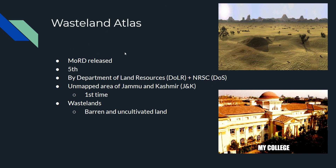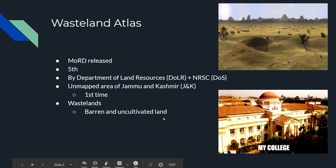The Atlas shows how much wasteland exists. For the first time, Jammu and Kashmir's wasteland is also included. Wasteland refers to barren and uncultivated land which is unproductive.